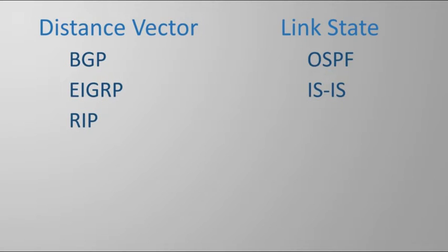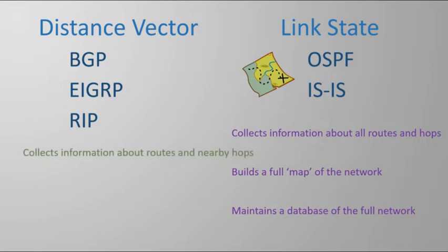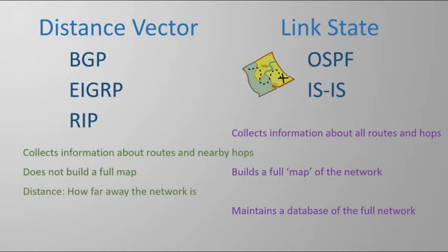At a high level, a router running a link state routing protocol builds a full map of the network. Each router shares information on each path they know about with their neighbors, who pass it on further. The result is that every router builds the same map of the network. Distance vector routing protocols, which include RIP, take a different approach. Routers share routing information with neighbors but won't share as much and won't build a full map. They simply share a network and how far away it is — for example, a router might say it knows about 10.10.10.0 and it is two hops away.